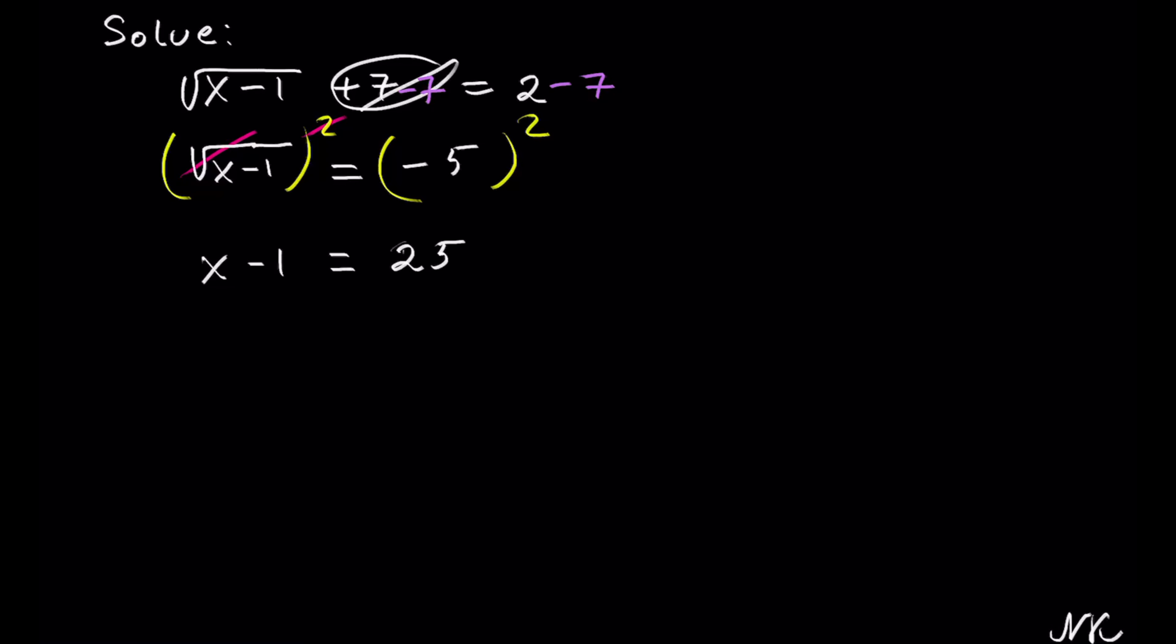To solve for x, we just have to do the inverse of minusing 1 by adding 1 to both sides, so 25 plus 1. And we get x minus 1 plus 1 is 0, equals 25 plus 1, which is 26.